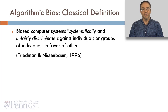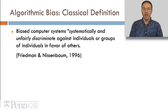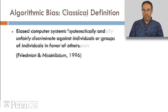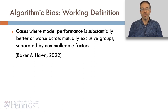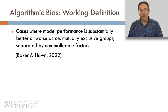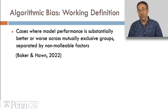So what is Algorithmic Bias? One classical definition comes from Friedman and Nissenbaum, who say that biased computer systems systematically and unfairly discriminate against individuals or groups of individuals in favor of others. A working definition that I like, for obvious reasons, is Baker and Hahn 2022, which is cases where model performance is substantially better or worse across mutually exclusive groups separated by non-malleable factors — something that someone in a school system can't realistically change about a student, such as their race or where they live.